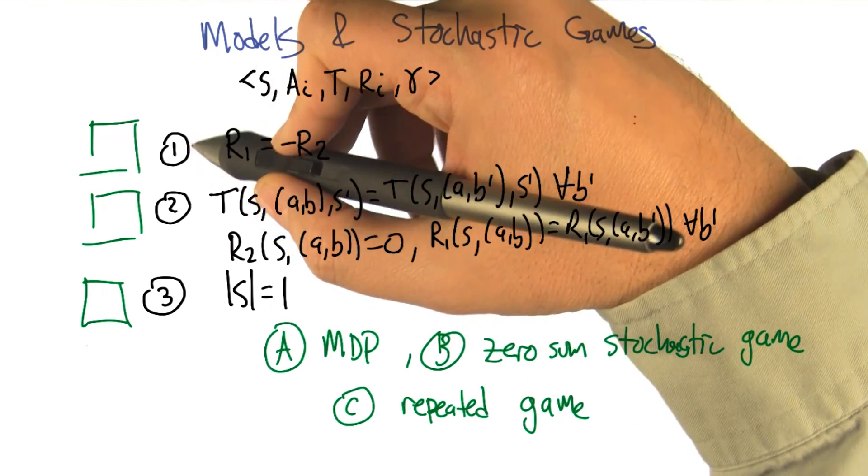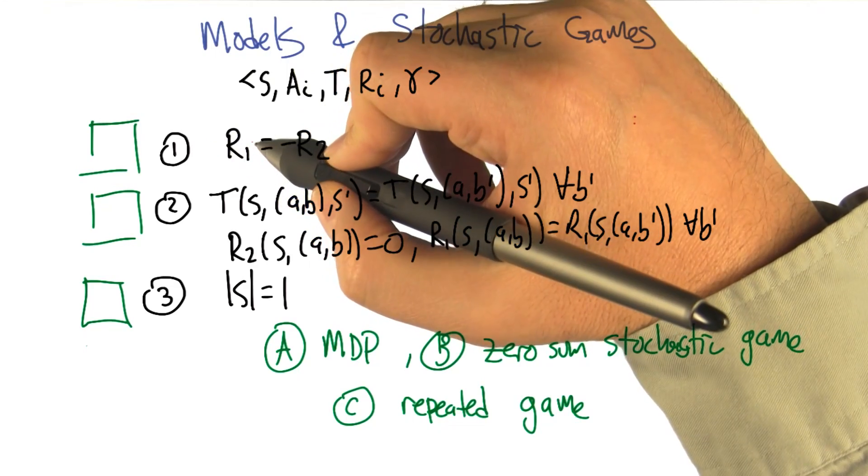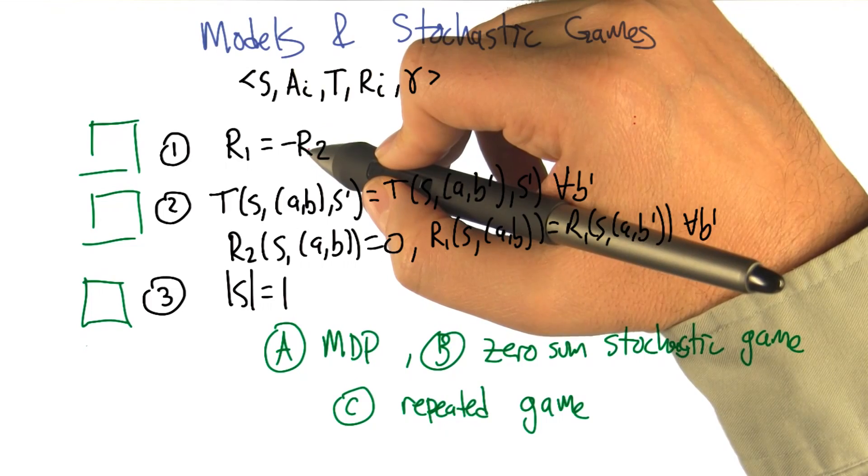So I wrote down three different ways of constraining the stochastic game model. One says that we're going to make the reward function for one player the opposite of the reward function for the other.